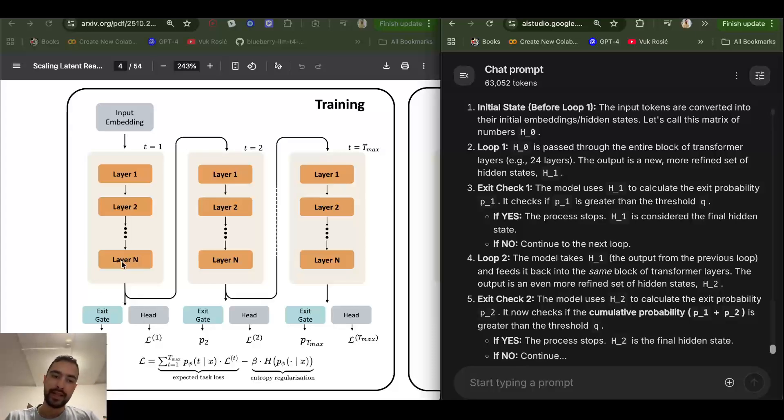Output head will produce the probabilities over entire token vocabulary for which token has what probability to be the next token. But that's done in the output head, not in the last layer. In this case, when we get to last layer, we don't go to output head, which would happen usually. But in this case, we will actually go back, depending on if this exit gate wants us to go back to loop again.